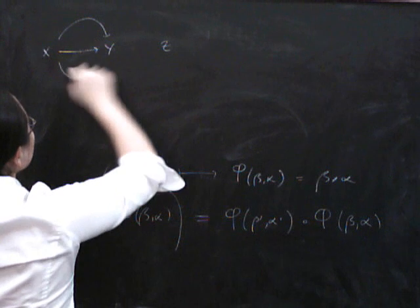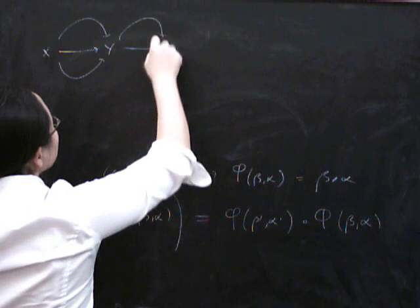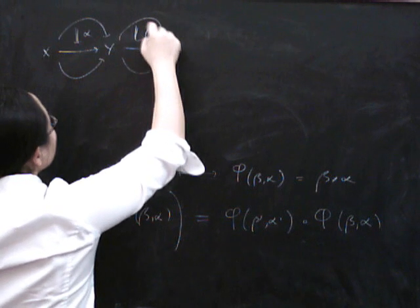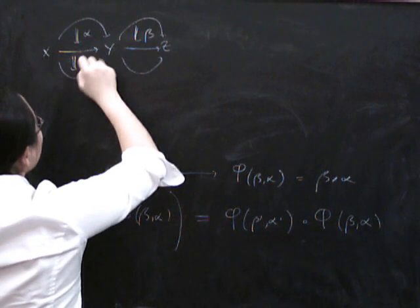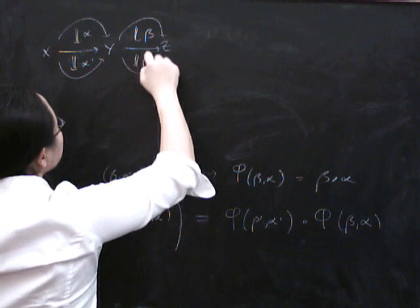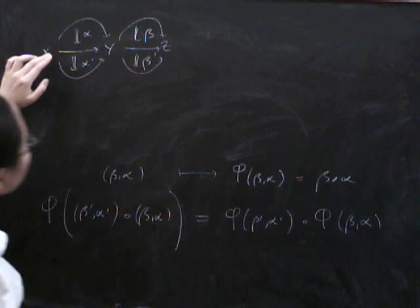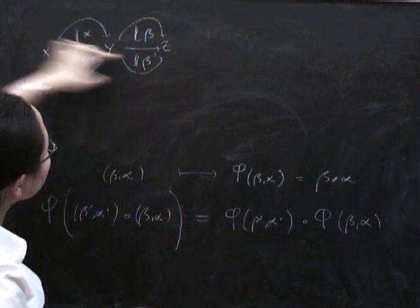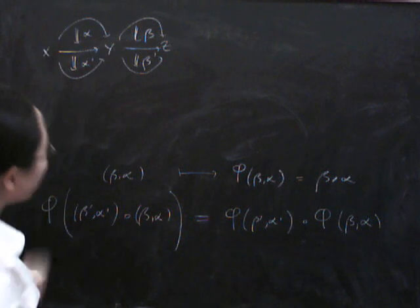I'm going to have first of all our pair (alpha, beta) here, and then we've got our pair (alpha prime, beta prime). And so then composability in the product category means that alpha prime and alpha are composable, and beta prime and beta are composable.